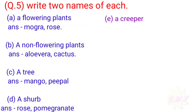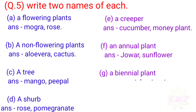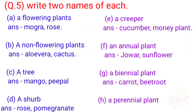E: A creeper — Cucumber, Money Plant. F: Annual plant — Jowar, Sunflower. G: Biennial plant — Carrot, Beetroot. H: A perennial plant — Mango, Gulmohar.